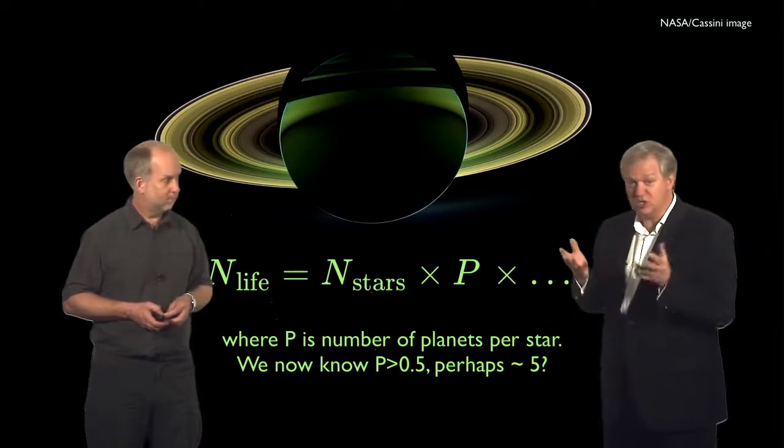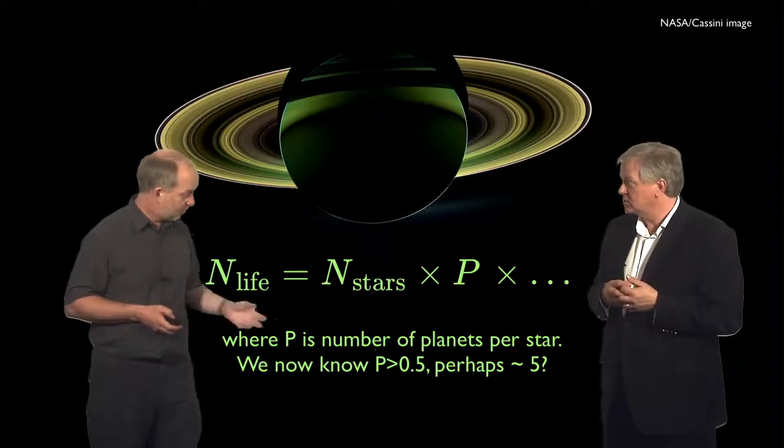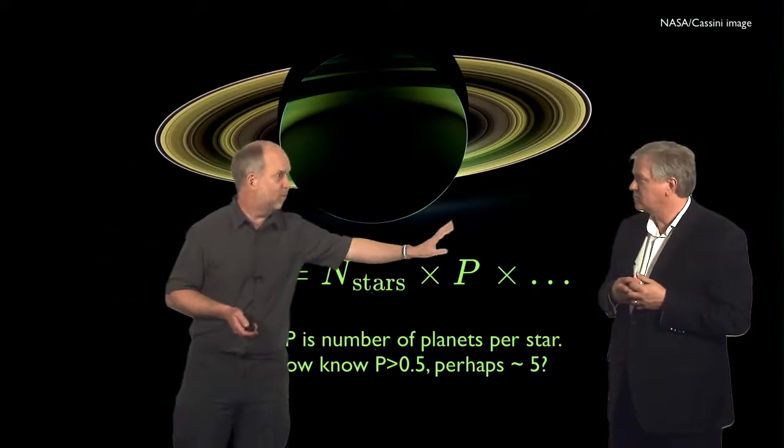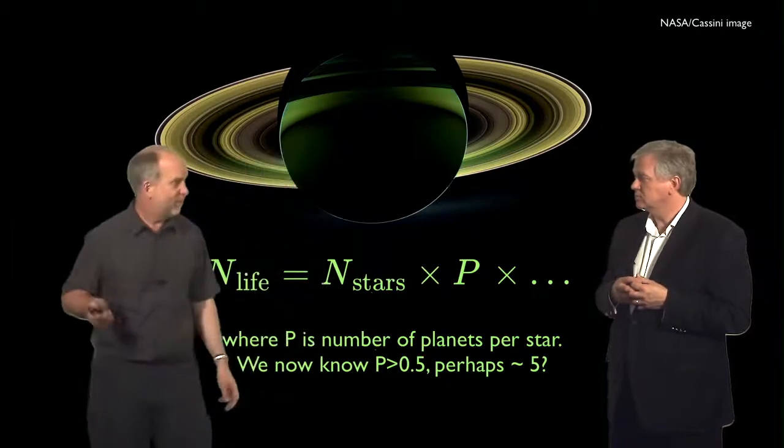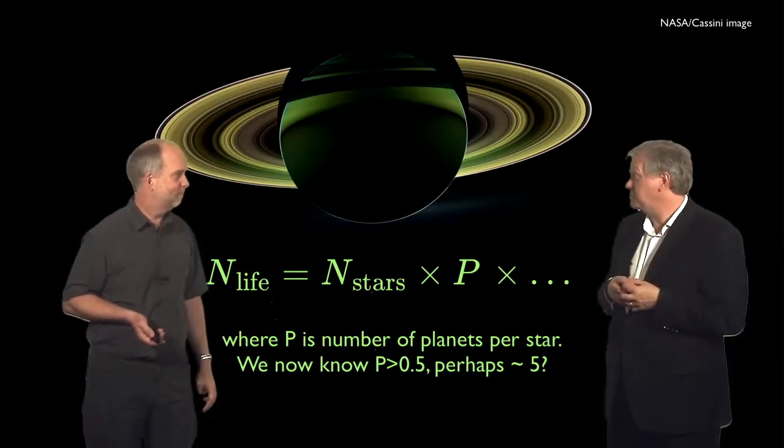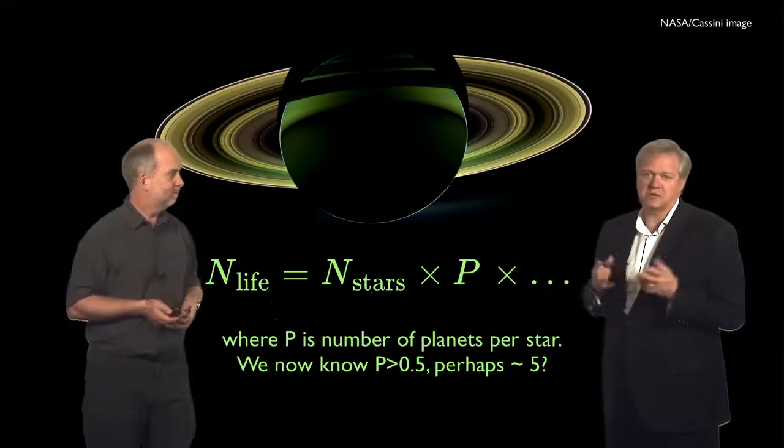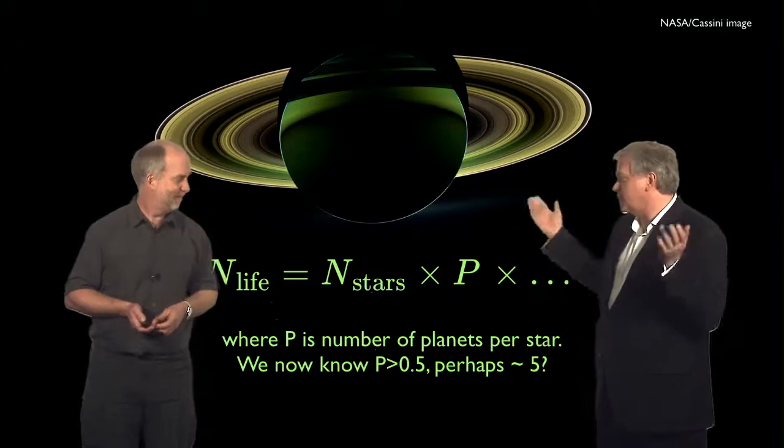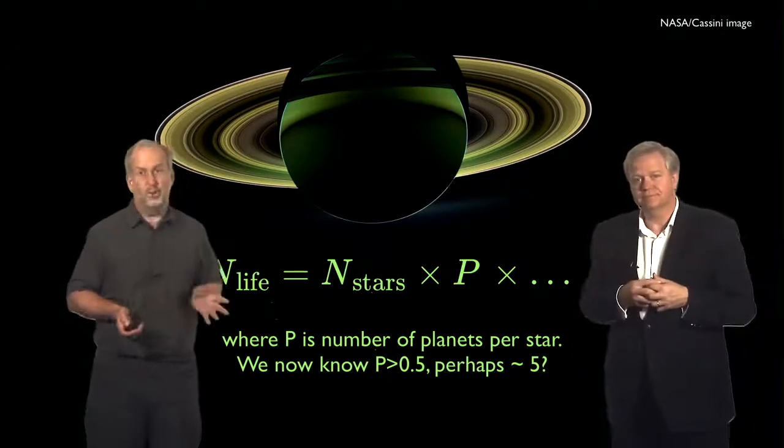And that's something that we didn't know ten years ago. In fact, probably several planets around it. So we know this number is at least a half and probably one, two, five, ten, something like that. But to a factor of ten, we know the number, which doesn't sound great, but since we didn't know it at all ten years ago, that's a big improvement. So there are going to be lots of planets out there.